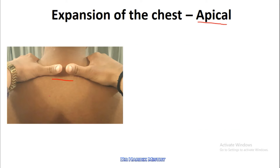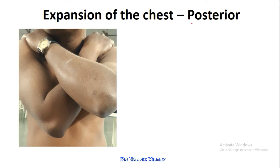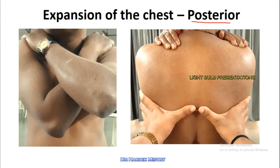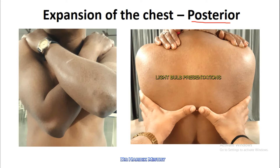Expansion of the chest on the posterior side. To examine this, tell your subject to place their hands crossly over the shoulders, as you are seeing in this photograph. Then put your hands over the lower rib cage on the posterior side. Fingers should be parallel to the ribs and the thumb must be at the center.